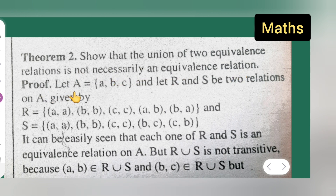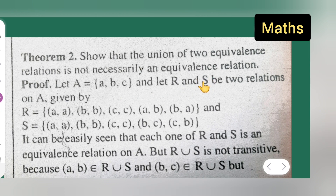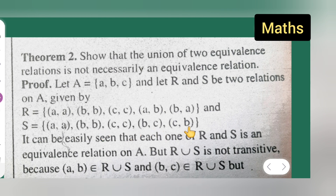Proof: Let A be a set. A is equal to {a, b, c}. Let R and S be two relations on A, given by R = {(a,a), (b,b), (c,c), (a,b), (b,a)} and S = {(a,a), (b,b), (c,c), (b,c), (c,b)}.